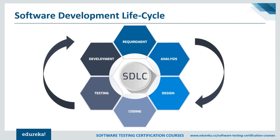The last step is the deployment and maintenance phase. After successful testing, the product is delivered and deployed to the customer by deployment or implementation engineers. Once customers start using the system, actual problems come up and need to be solved over time — this is the maintenance phase. 100% testing is not possible because the way testers test the product differs from how customers use it. Maintenance should be done as per the SLA — service level agreement.